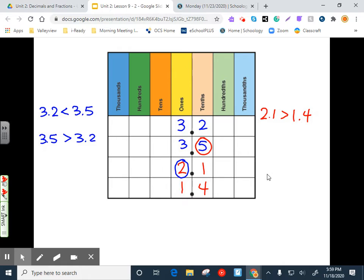So let's compare 2.1 or 2 and 1 tenth and 1 and 4 tenths or 1.4. Right away, we see that the 2 is bigger in this one. So we don't even have to look at the tenths column. So 2.1 is greater than 1.4. Even as an adult, I'm saying 2 points such and such. 2 and 1 tenth is greater than 1 and 4 tenths. There's our warmup.